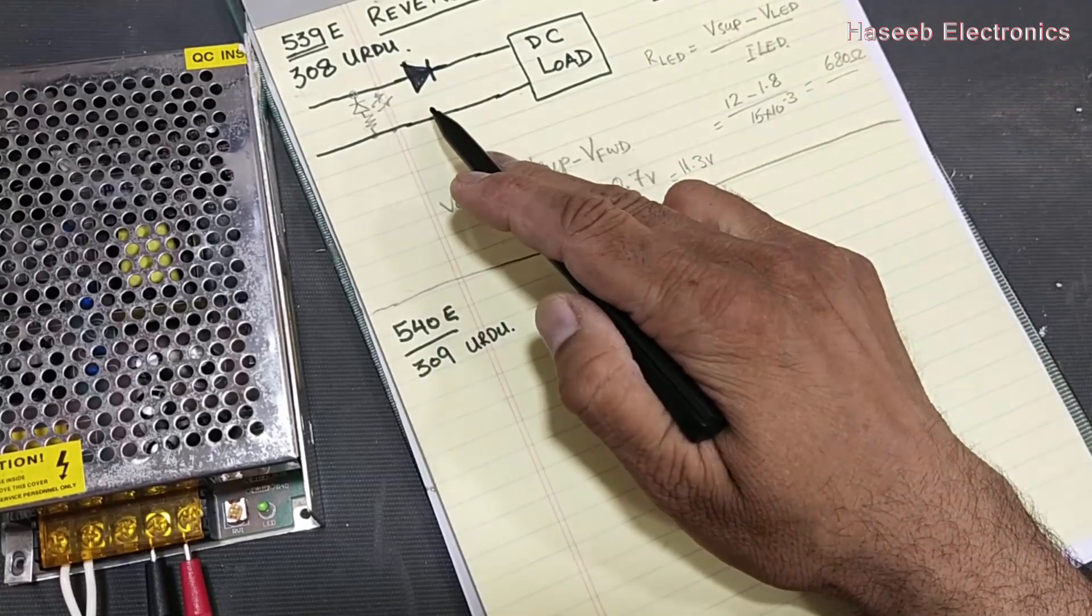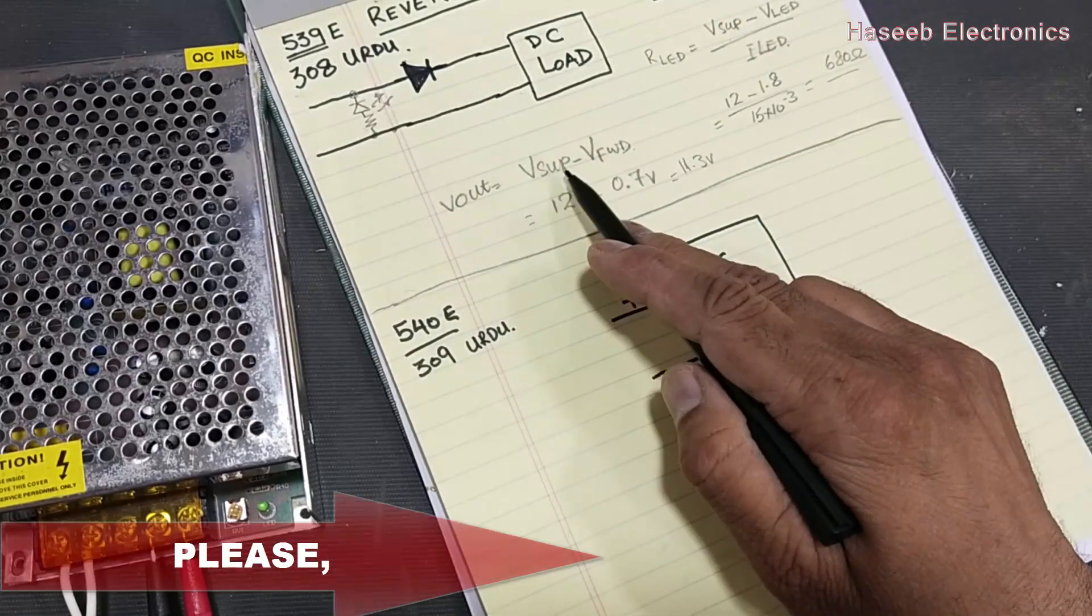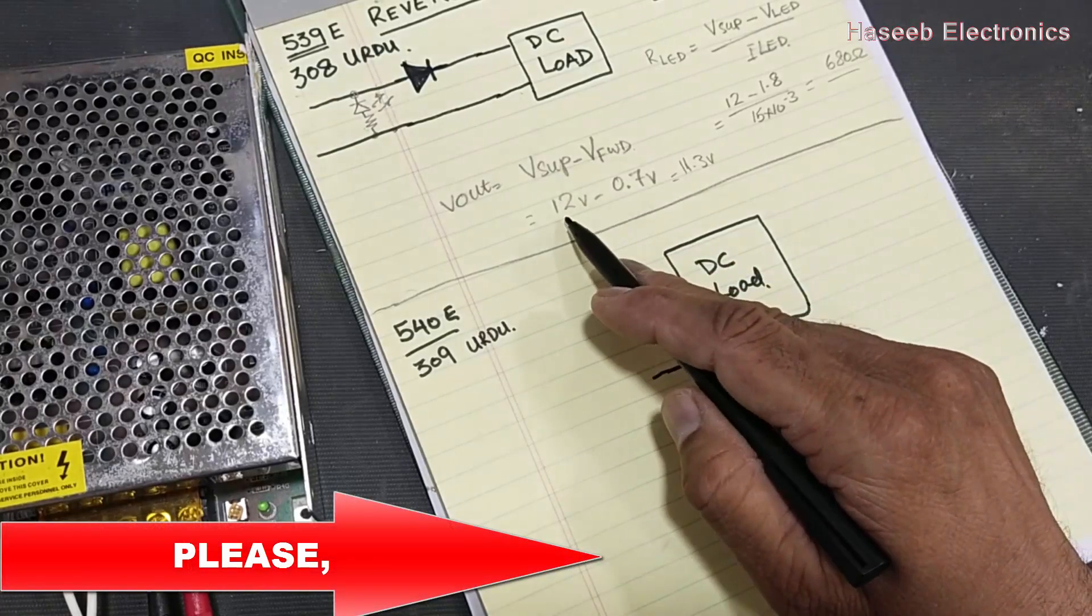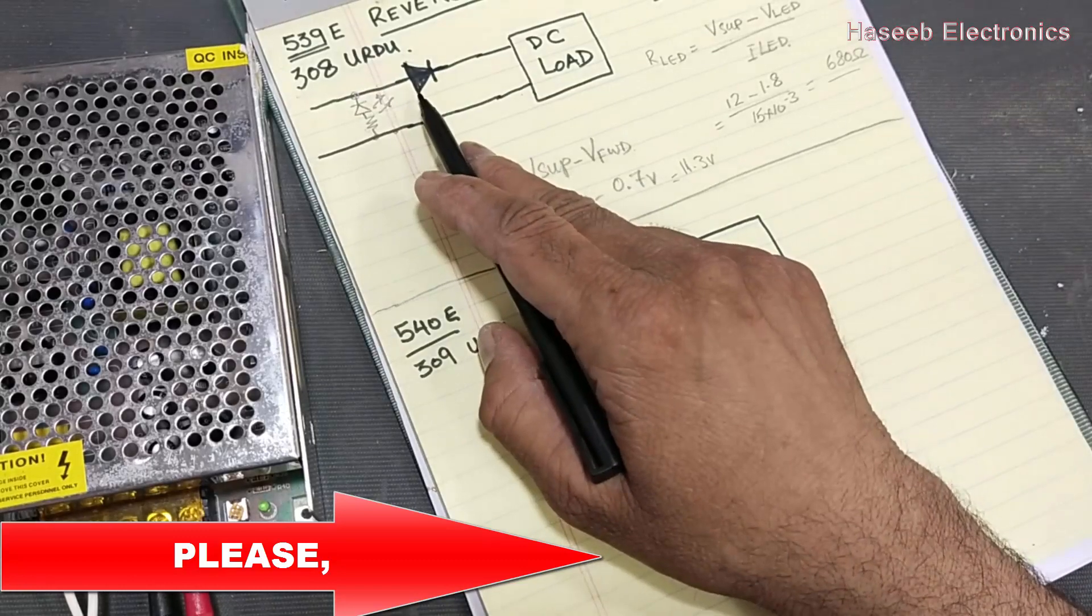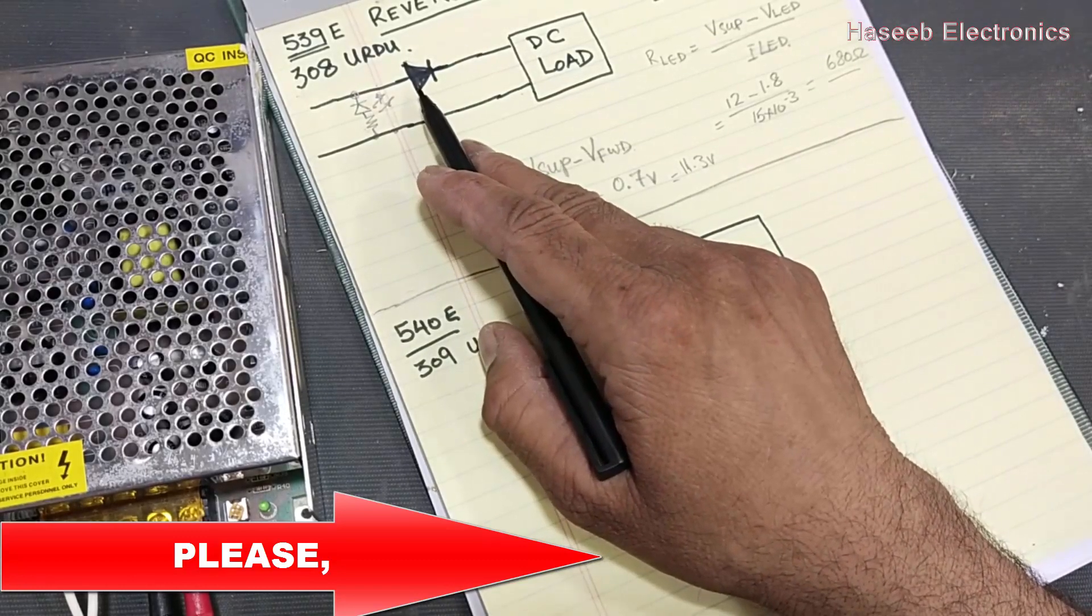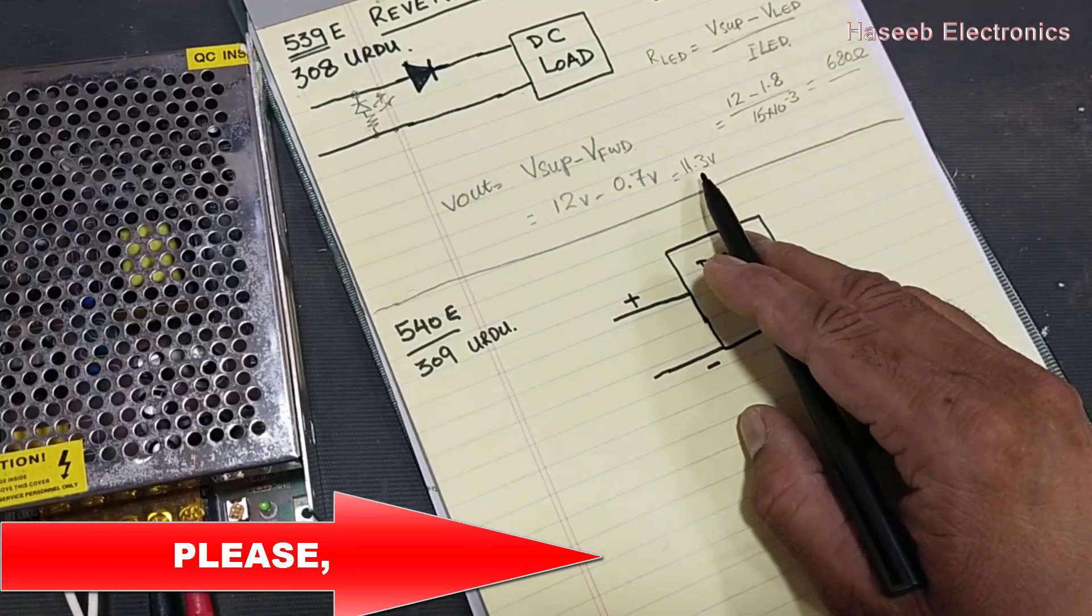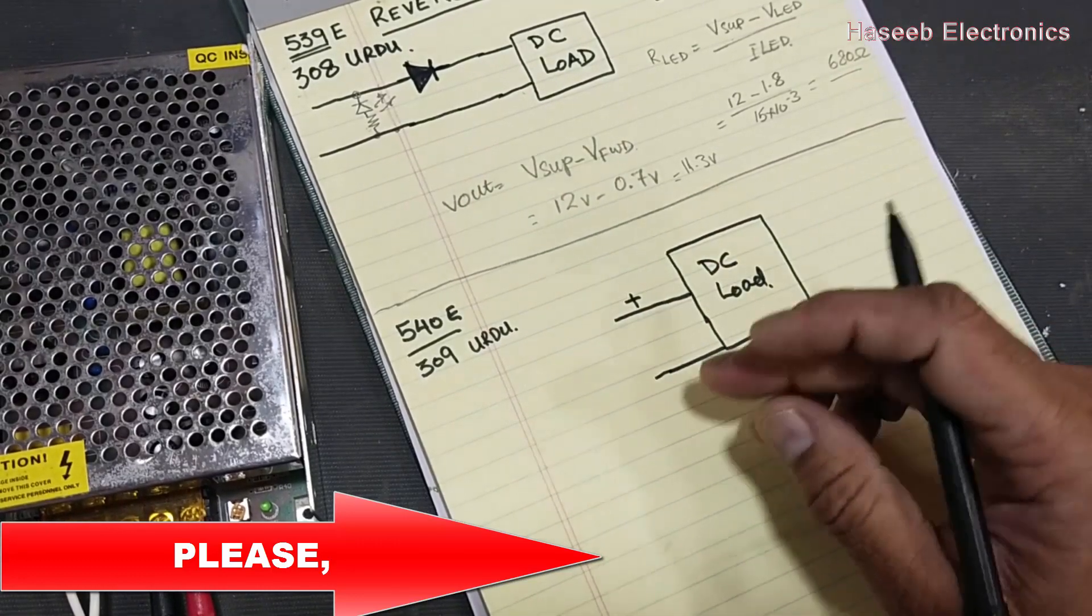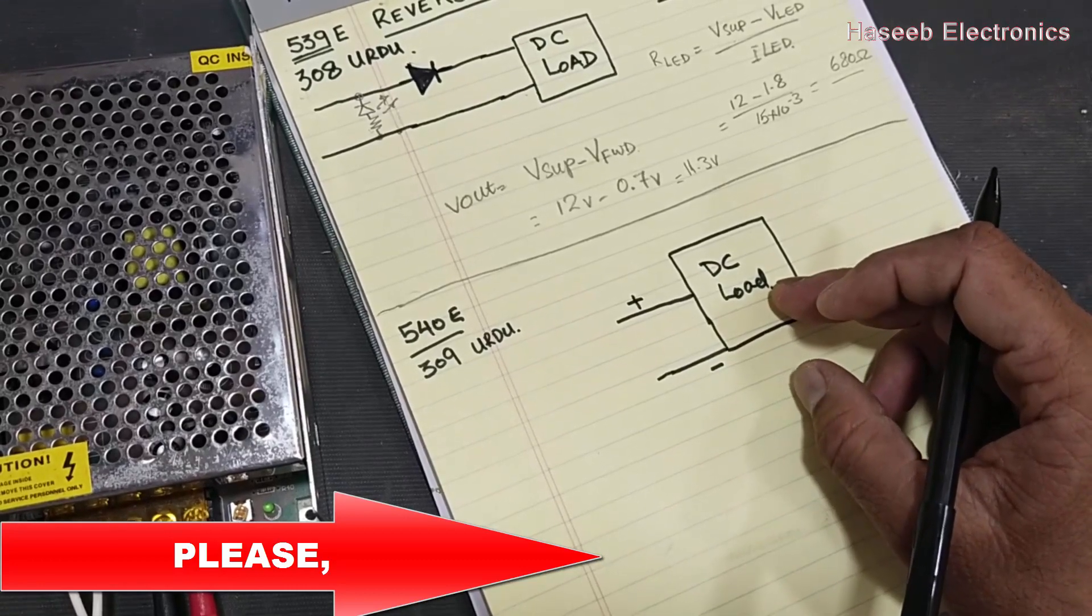In our last discussion, we discussed if we connect this series diode, the output voltage will drop how much? If we are applying 12 volts minus 0.7 for the series diode, the output voltage will be 11.3 volts.